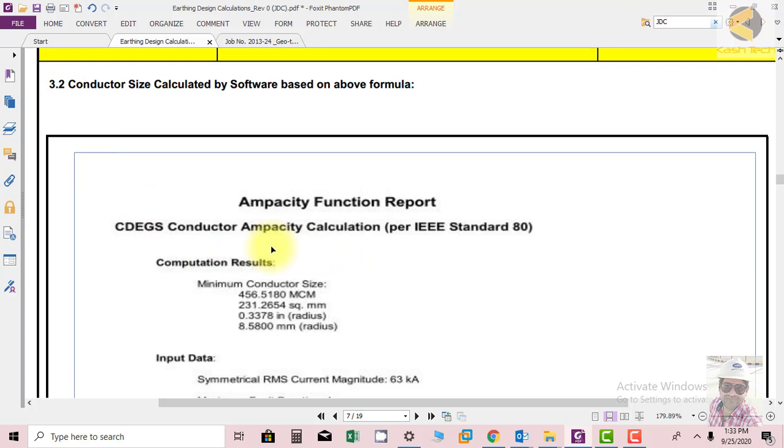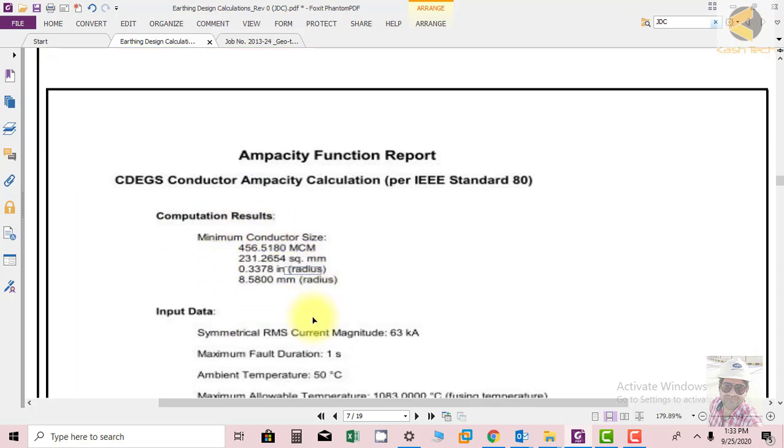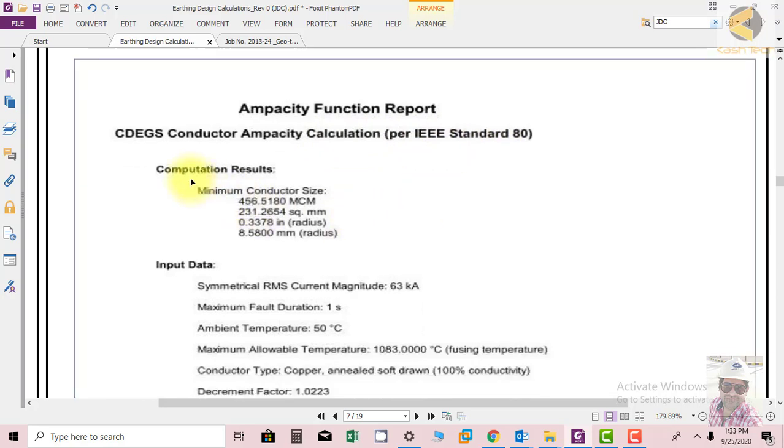We have explained the formula but actually the conductor size, when you put the data, will be calculated automatically. You see the results which are coming from CDEGS directly. These are the CDEGS conductor ampacity calculations and we are following IEEE 80. These are the computation results. Maximum conductor size is 456 MCM, 231 square mm.